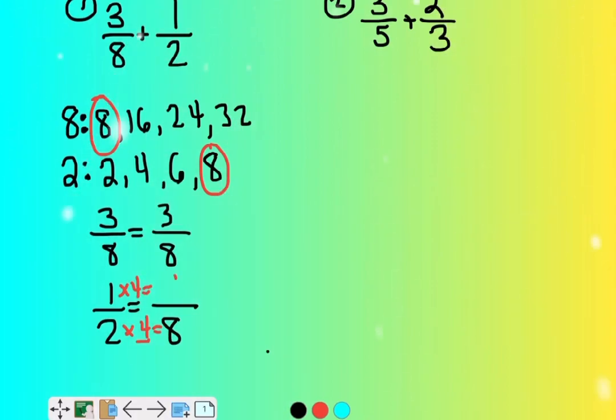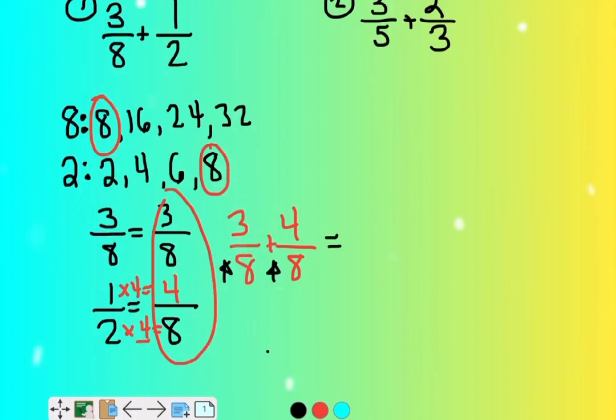One times four is four. So now I have two fractions that I can add together because they have the same denominator. Three eighths plus four eighths. Now that I have two fractions I can work with because they have the same denominator, I just say, if this one's cut into eighths and this one cut into eighths, let me see how many eighths they have together. So the denominator is going to stay the same.